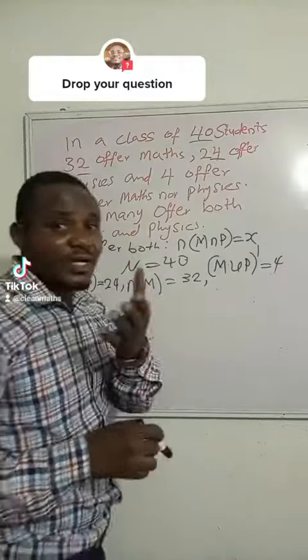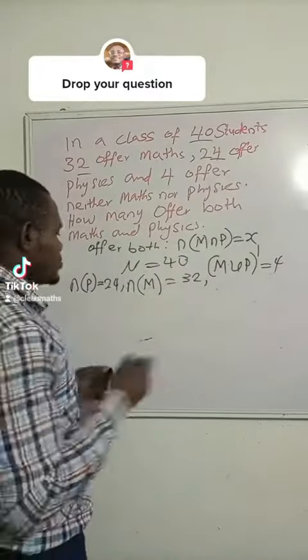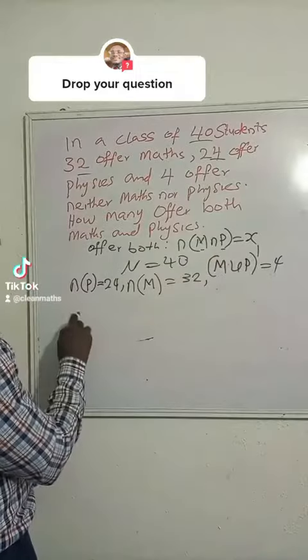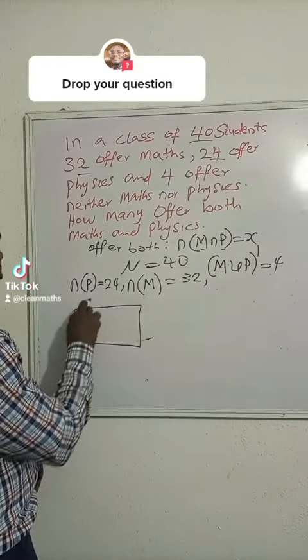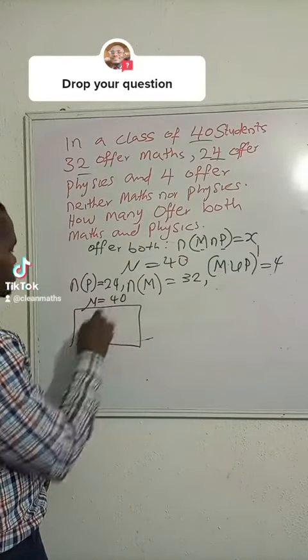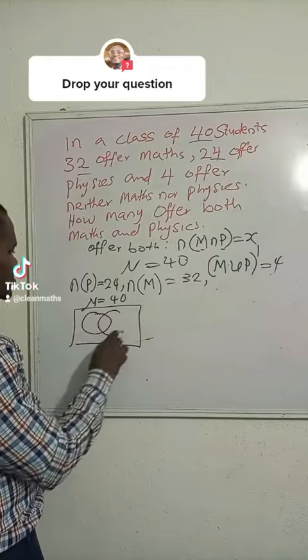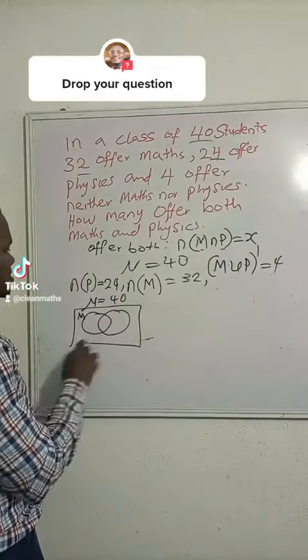Let's draw a Venn diagram to see how we can place all this. We're having just 2 sets, math and physics. This is our Venn diagram, our u, the universal set is 40. So we have mathematics and physics, they are going to intersect.